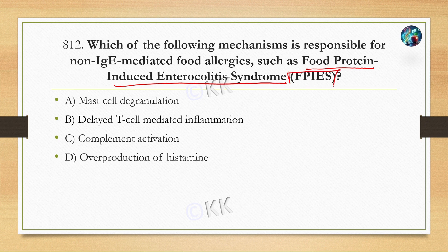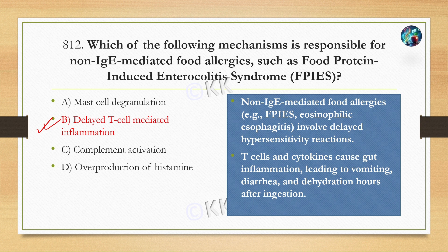Option A: mast cell degranulation, Option B: delayed T-cell mediated inflammation, Option C: complement activation, Option D: overproduction of histamine. The correct option is Option B, delayed T-cell mediated inflammation. Non-IgE mediated food allergies such as food protein-induced enterocolitis syndrome or eosinophilic esophagitis generally involve delayed hypersensitivity reactions.